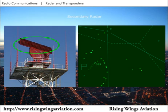When the transponder in the aircraft receives this interrogation signal, it replies by transmitting its four-digit transponder code. The secondary radar antenna receives this reply and forwards the code, azimuth, and distance to the computer system for processing and display on the radar screen.